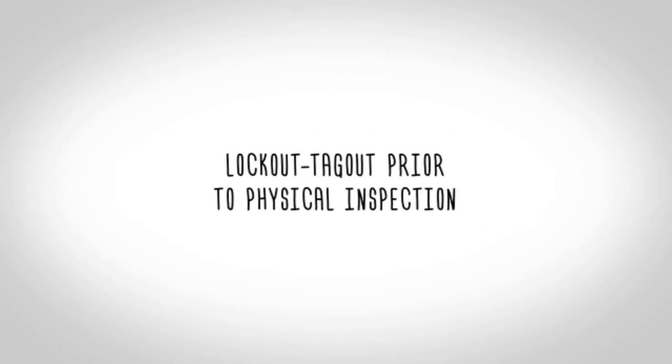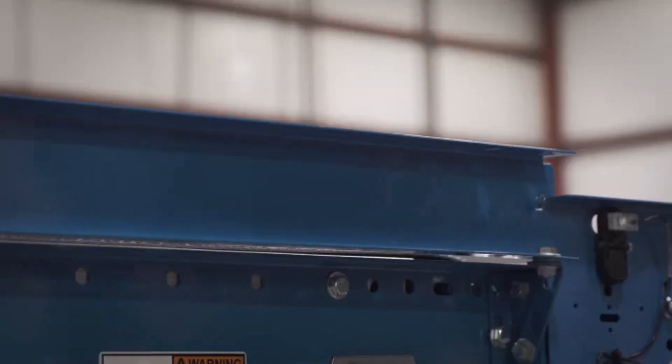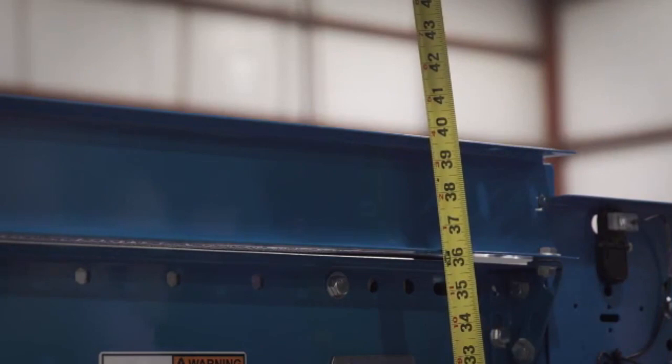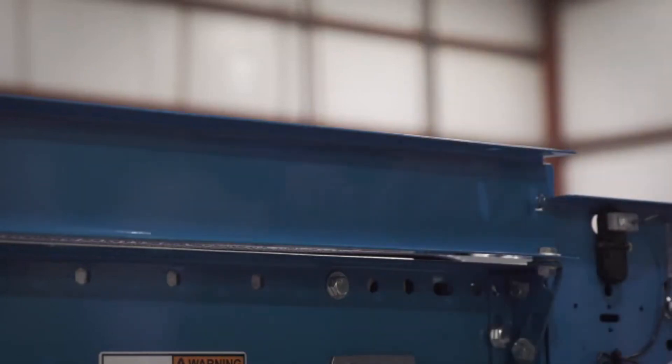Lock out tag out prior to physical inspection. Make sure the conveyor is level across the width and the length of the unit. Adjust the supports as necessary.